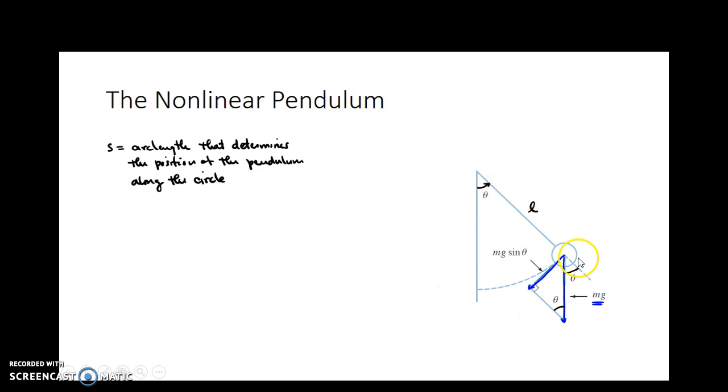So it turns out that one thing we know is that the arc length is equal to the radius times theta, the angle. Well, for us, that is, we're calling the radius L and the angle theta. Now, L is constant. The only things that are changing here are S and theta. This is the arc length here, this dotted line.